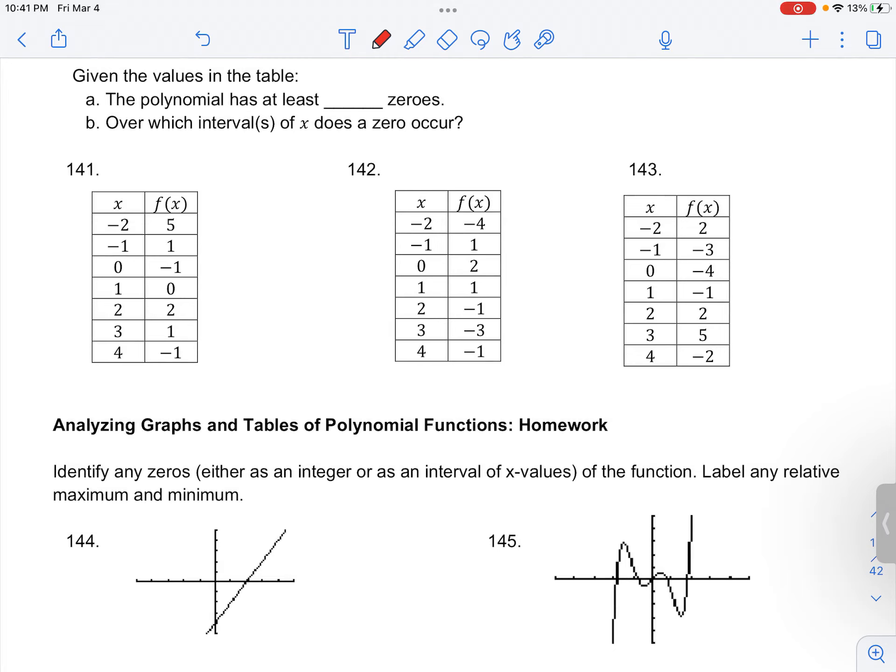So we're looking for a change in f of x locally from a positive to negative or a negative to a positive over an interval. We have that change occur from x equals negative 2 to negative 1.